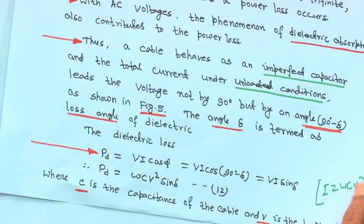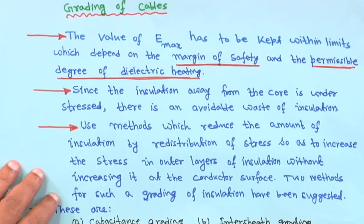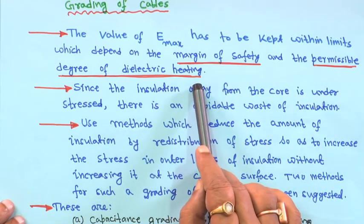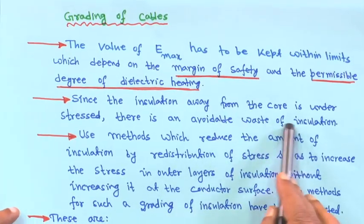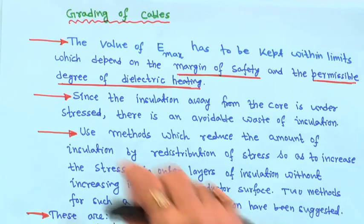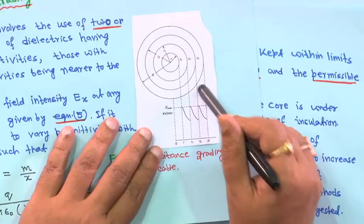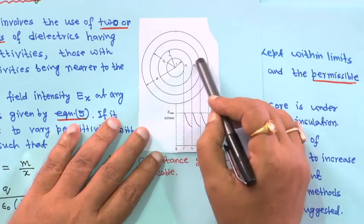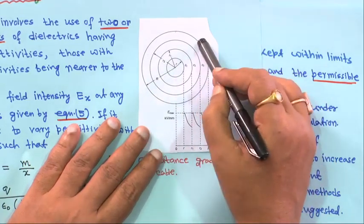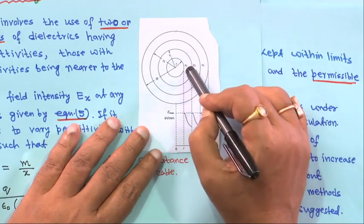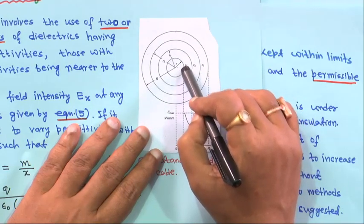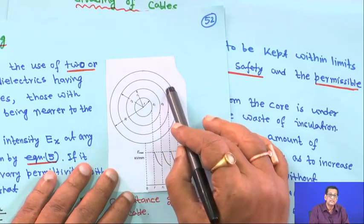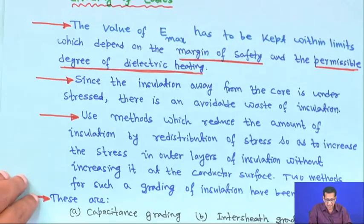Next we consider the grading of cables, because the value of E_max has to be kept within limits which depend on the margin of safety and the permissible degree of dielectric heating. The insulation away from the core is under-stressed, while insulation very close to the core conductor is over-stressed.